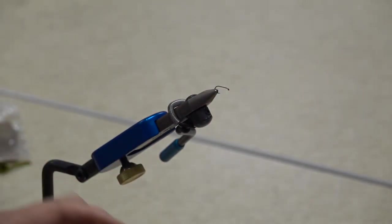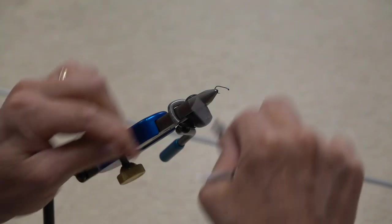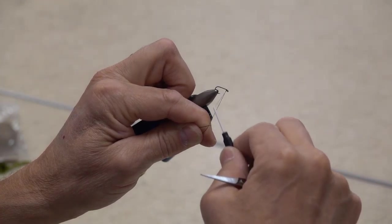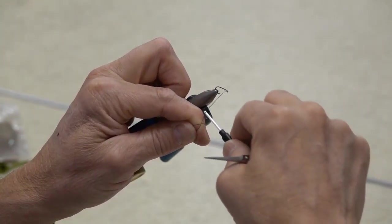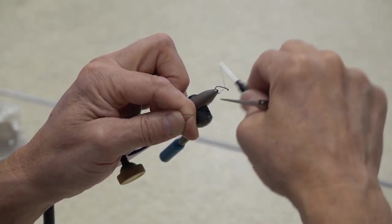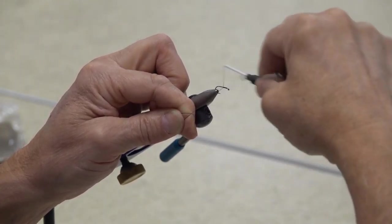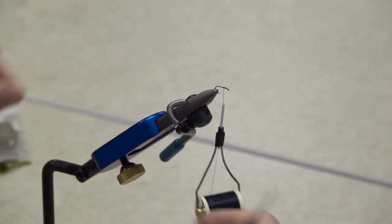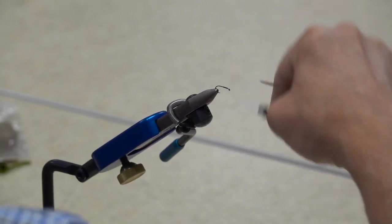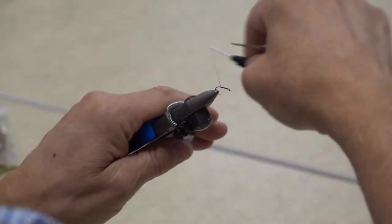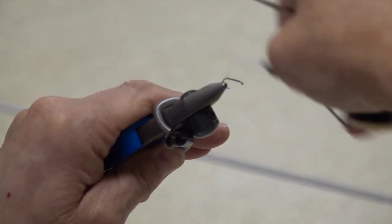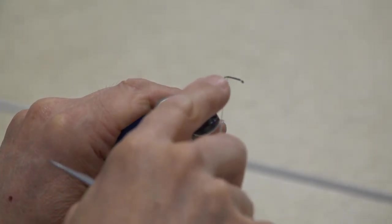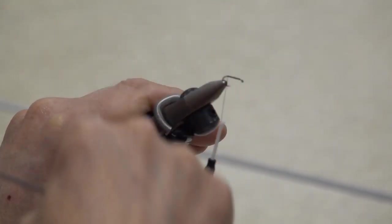Very similar to the woolly bugger that we just tied, however this is a dry fly. So we're going to start our thread and again trying to keep that minimum distance from the hook eye back. Get my thread started here, trim off the tag end, and I'm going to take it all the way to the very back of the hook shank, right where the straight part starts to curve.